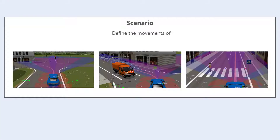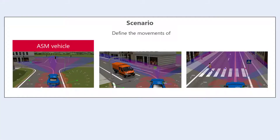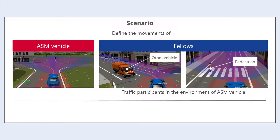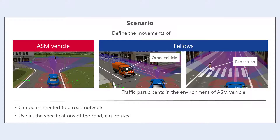Scenarios define the movements of the ASM vehicle as well as fellows. Fellows are traffic participants in the environment of an ASM vehicle, for example, other vehicles or pedestrians. A scenario can be connected to a road network and can use all the specifications of the road, for example, routes that can be used by the ASM vehicle and fellows.